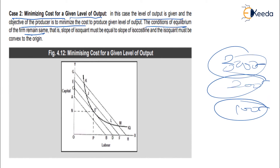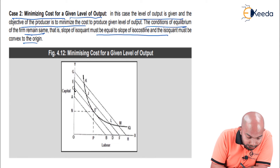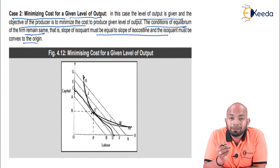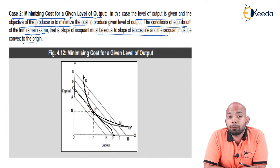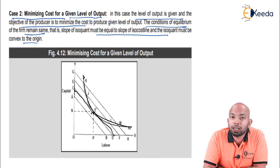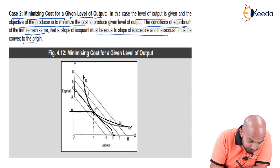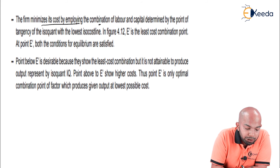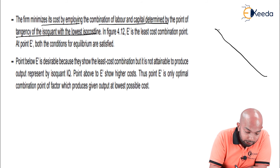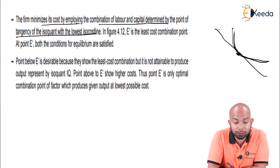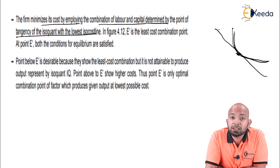The conditions of equilibrium remain the same: the slope of the isoquant must equal the slope of the iso-cost line, and they must meet at a tangency point in a convex way. Wherever the isoquant curve meets the iso-cost line at tangency, that represents the minimum cost at which the given output can be achieved.